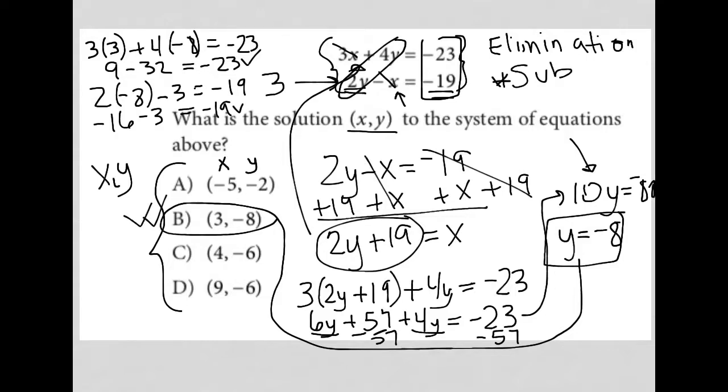So as you can tell there were three options here: either elimination or substitution which is what I chose or PIA which stands for plug-in answers.